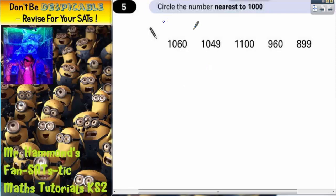Question 5. Circle the number nearest to 1000. Well, let's start having a look at the gaps from each number up to 1000.